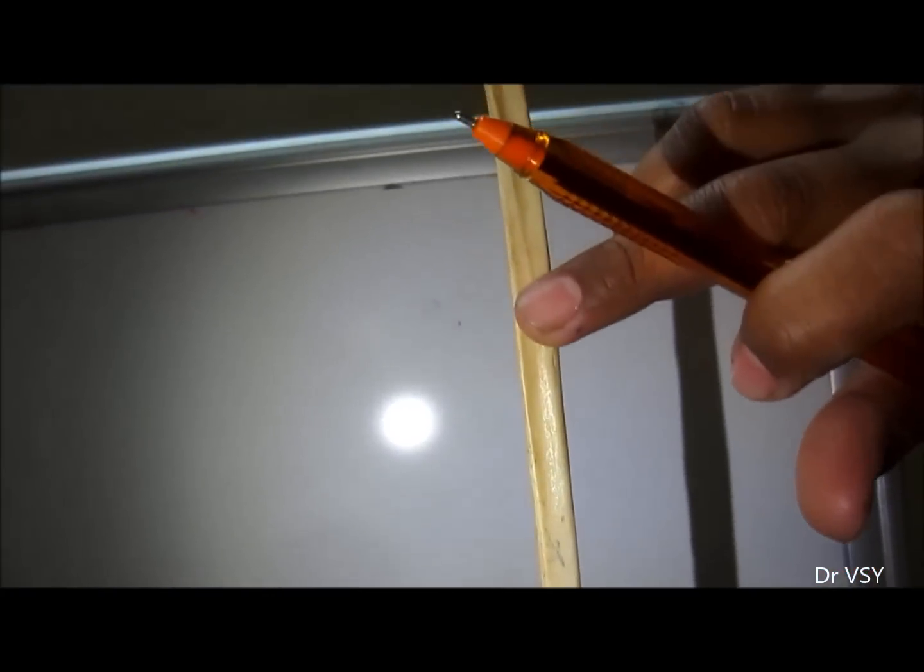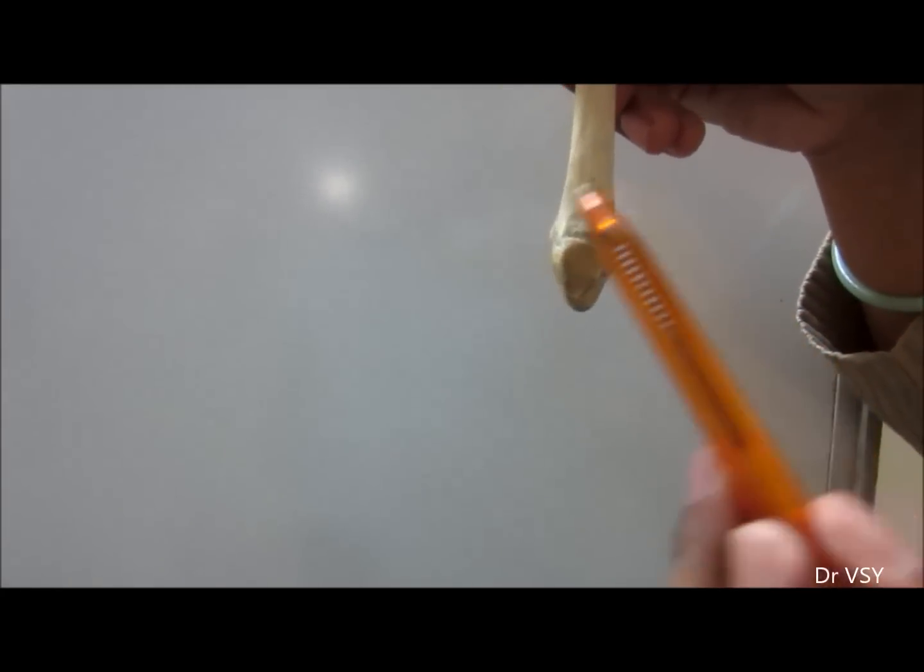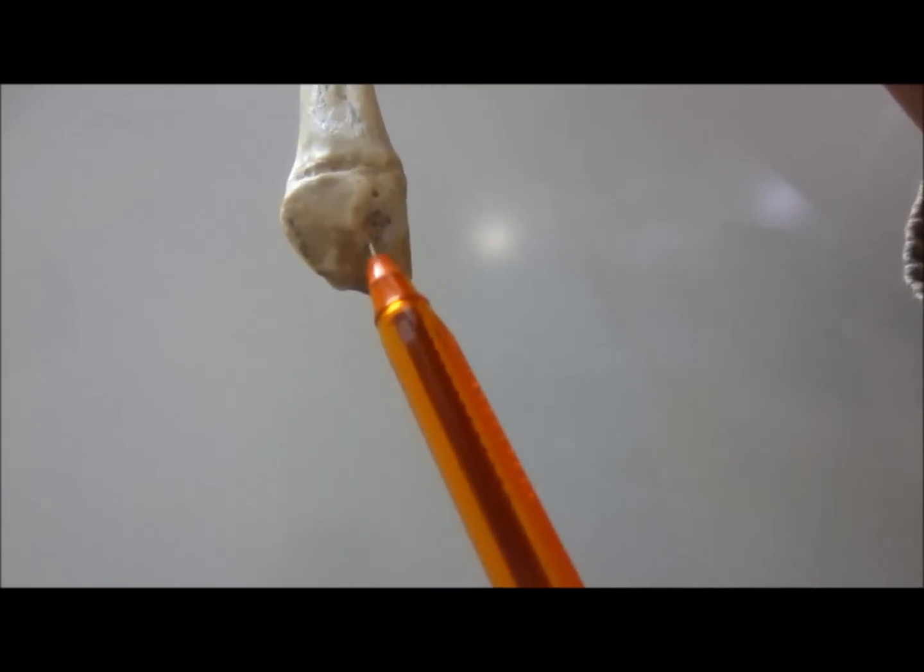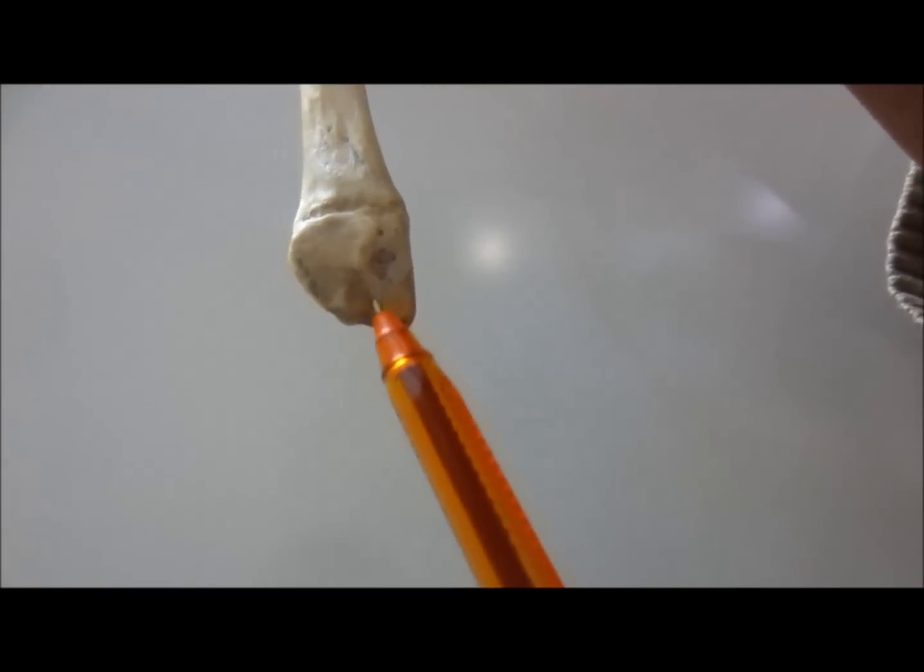Medial border of the fibula is also known as interosseous border. Lower end has the styloid process, and here there is fossa which is known as malleolar fossa.